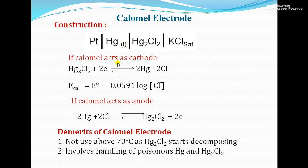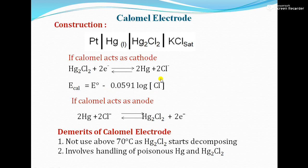If the calomel electrode acts as a cathode, the reaction is: Hg₂Cl₂ + 2e⁻ → 2Hg + 2Cl⁻. In the case of oxidation, the Nernst equation is: E_cell = E⁰ − (0.0591/N) × log([products]/[reactants]). The product side is Cl⁻ and the reactant side is Hg₂Cl₂, with N = 1. If calomel acts as an anode, the reaction is the reverse. The formula becomes: E_cell = E⁰_cell − 0.0591 × log(1/[Cl⁻]).